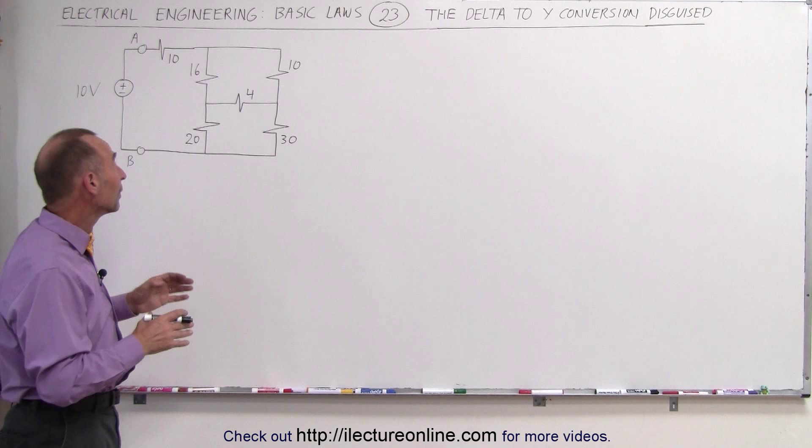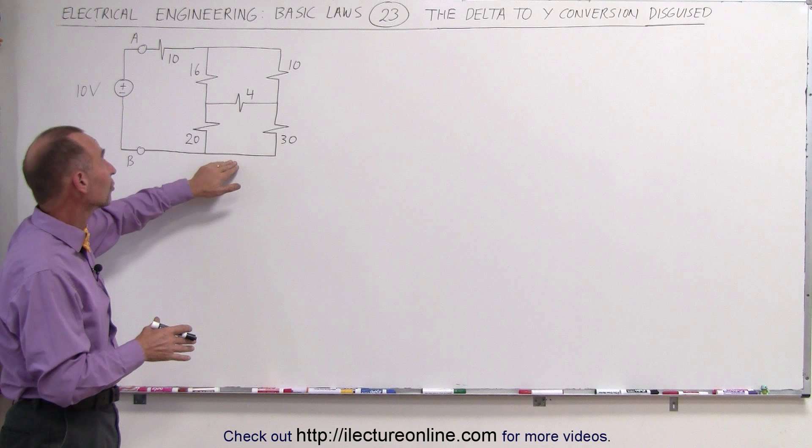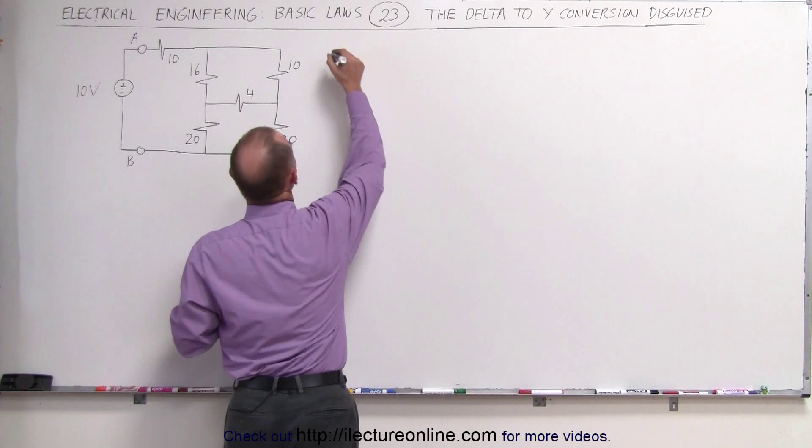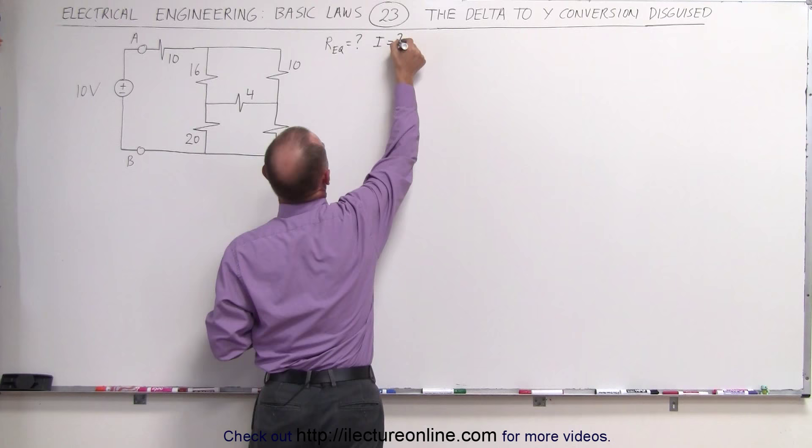Because actually without using a delta-to-y conversion, it would be very difficult to find the equivalent resistance of the circuit, and then ultimately find the current through the circuit. So let's say that that's what we're trying to find. What is the equivalent resistance, and what is the current through the circuit?